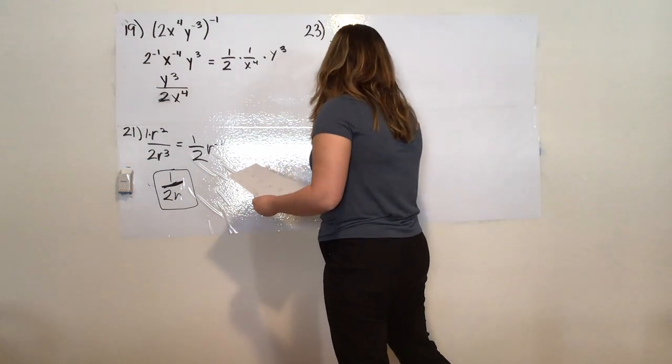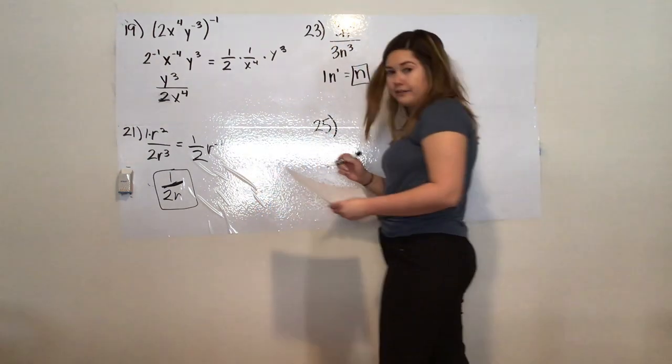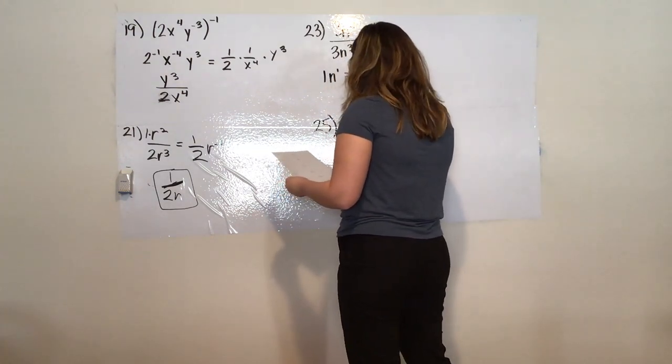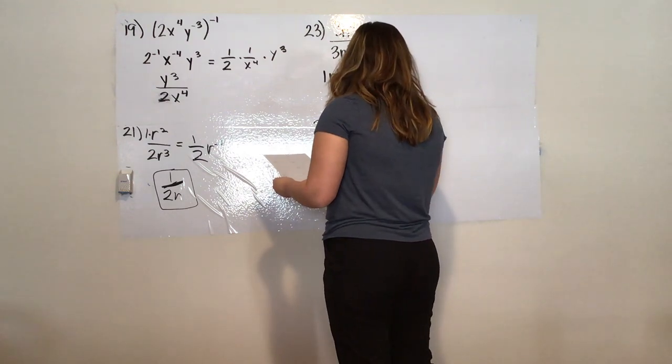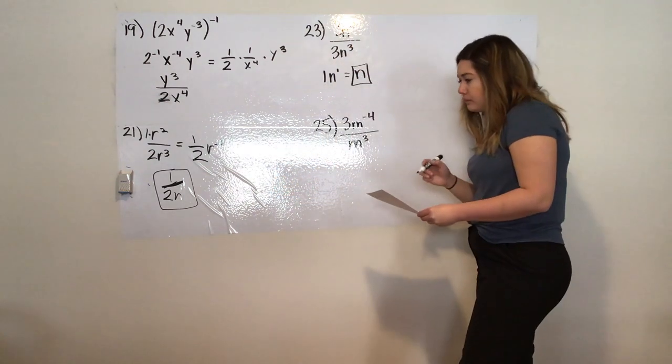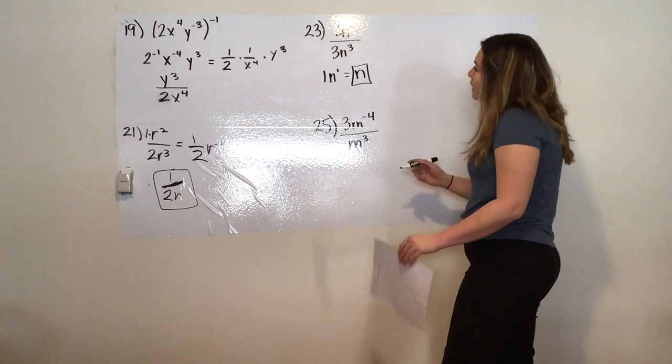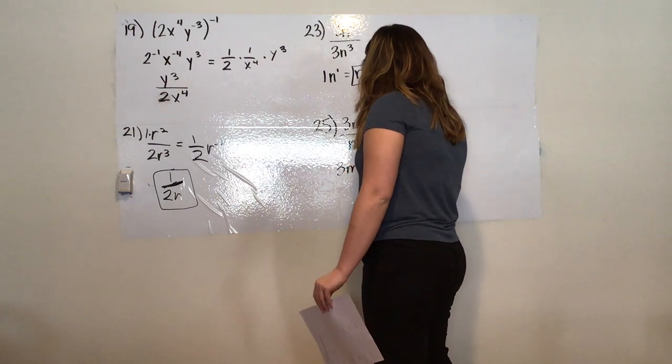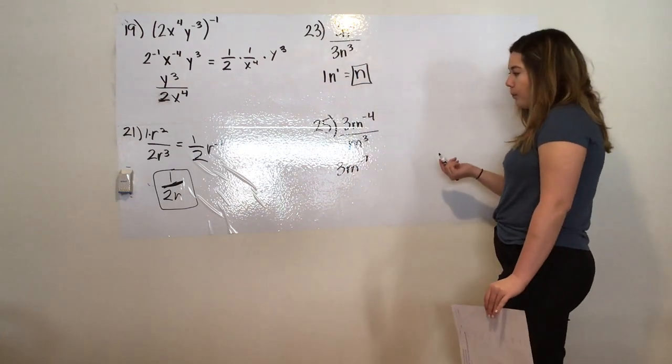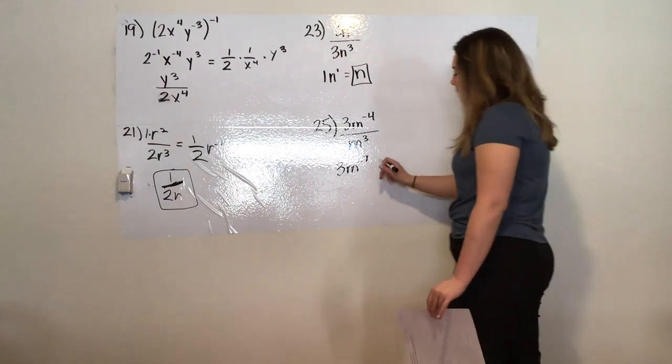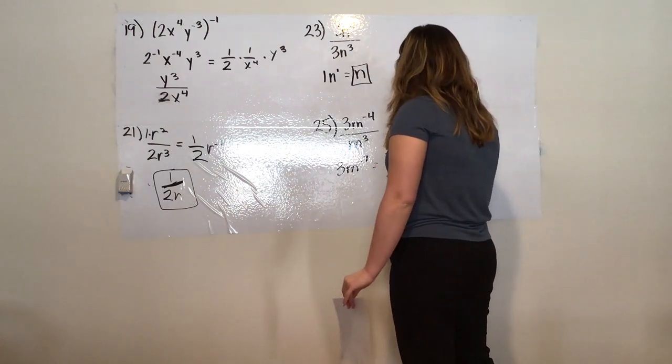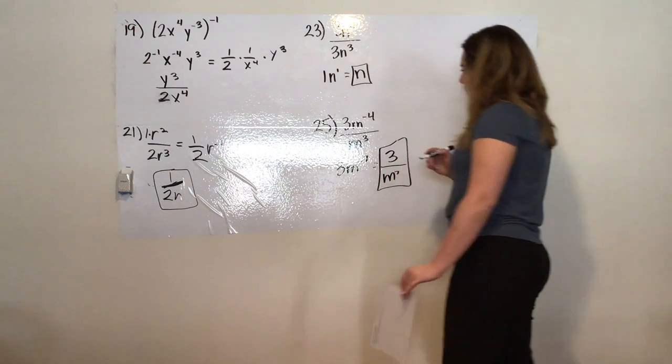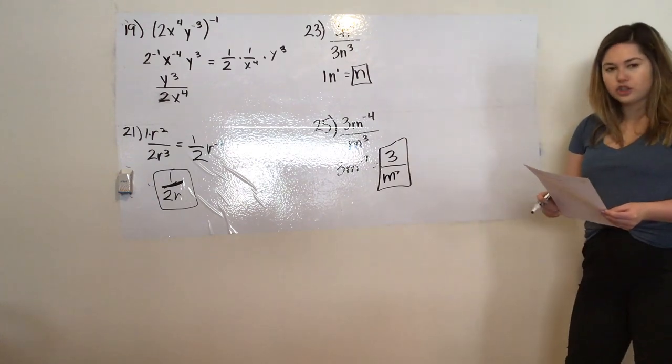Moving on to lucky 25 because Miss Kiefer is 25 now. We have 3m to the power of negative 4 all over n to the power of 3. Same thing, I'm just going to use a quotient rule. So I have negative 4 minus 3, so now I have 3m to the power of negative 7, which I know becomes 3 all over n to the power of 7.